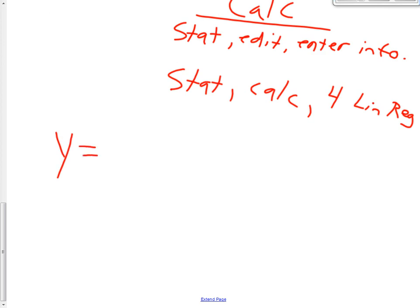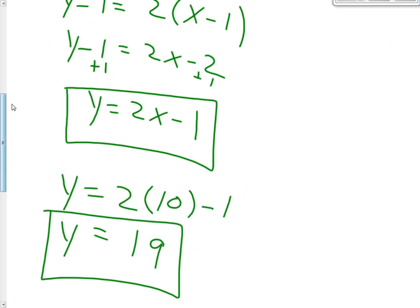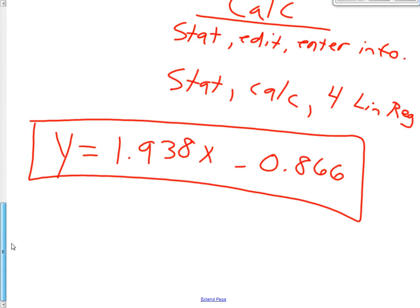And, then we get our line of best fit, which our calculator found to be Y equals AX plus B, which is Y equals 1.938X minus 0.866. So, if you kind of compare the line that we found and compare this line, this slope is 1.938. Our slope was 2. So, 1.938, they're pretty close. Here, we got a Y intercept of a negative 1, and our calculator got a Y intercept of a negative 0.866. Once again, pretty close. Our calculator is perfect. We are not.